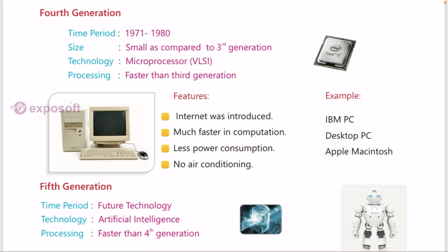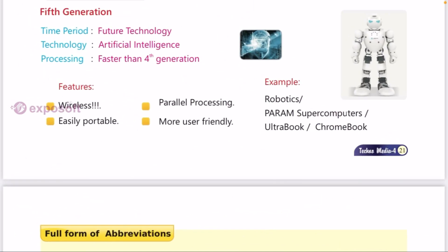Fourth generation - size is small compared to third generation, technology is microprocessor, and processing is faster than third generation. Fifth generation - technology is artificial intelligence and processing is faster than fourth generation.